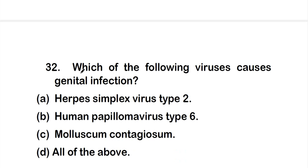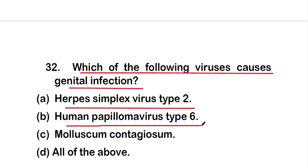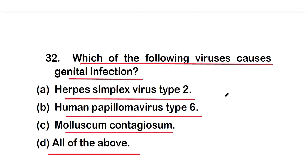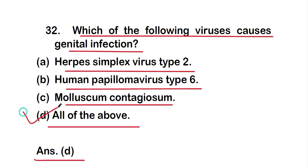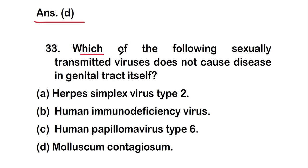Question 32: Which of the following viruses causes genital infection? Option A: Herpes simplex virus type 2, option B: Human papillomavirus type 6, option C: molluscum contagiosum, or option D: all of them. The right answer is option D — all of these viruses can cause genital infections.